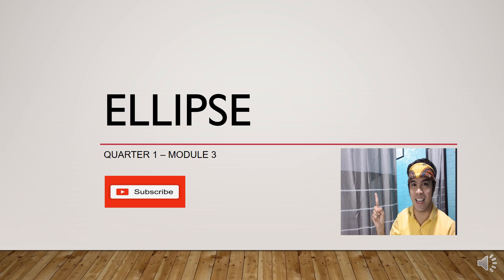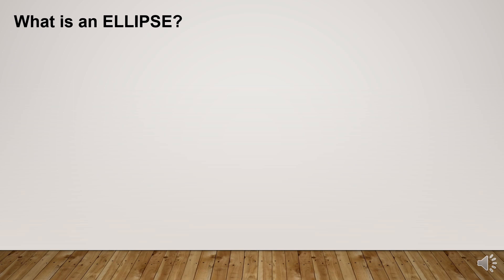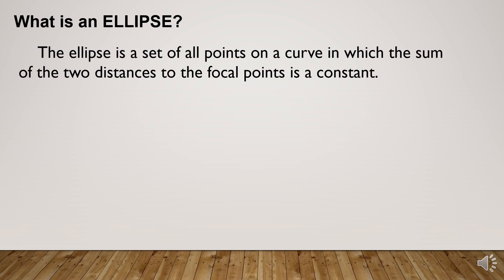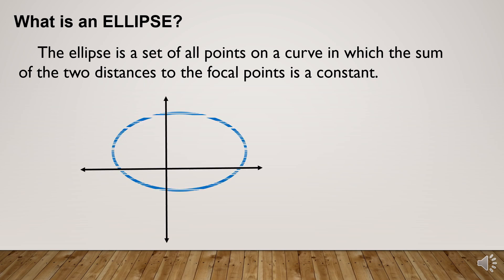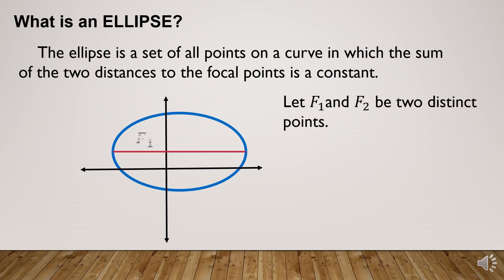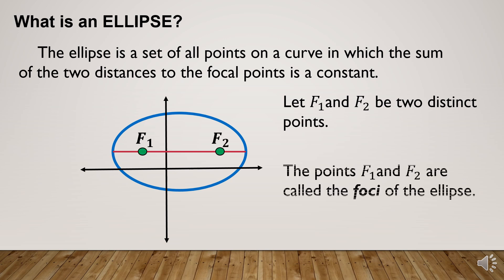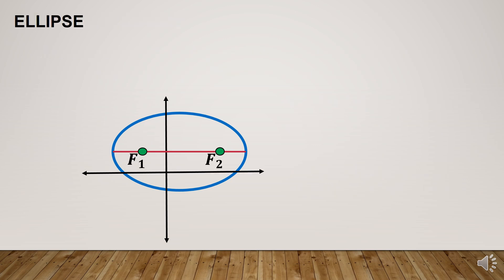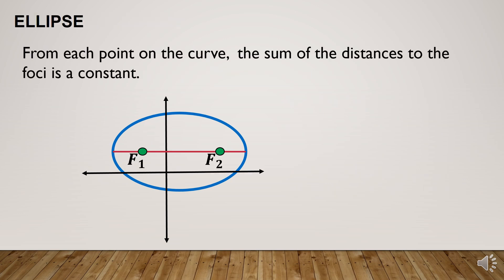Don't forget to subscribe and click the notification bell. What is an ellipse? The ellipse is a set of all points on a curve in which the sum of the two distances to the focal points is a constant. Let f1 and f2 be two distinct points. The points f1 and f2 are called the foci of the ellipse. From each point on the curve, the sum of the distances to the foci is a constant.